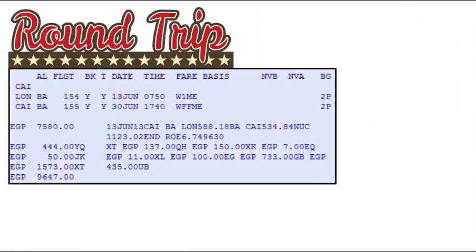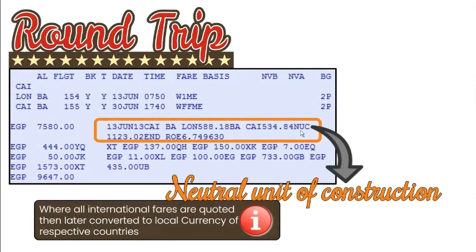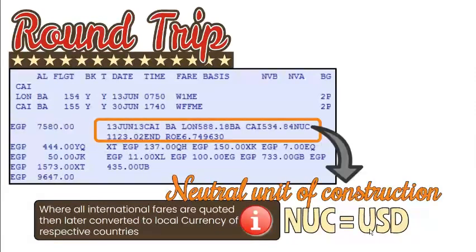Here's the fare construction for the given international flight example. Note that the base fare is expressed in NUC, which stands for Neutral Unit of Construction. All international fares are quoted in NUC and later converted to the local currency of respective countries. This creates uniformity in fare construction globally. NUC is equivalent to the US dollar and has been designated by IATA as the sole unit of constructing a fare between two cities. Even though local currency exchange rates may vary from country to country, the NUC level remains constant.